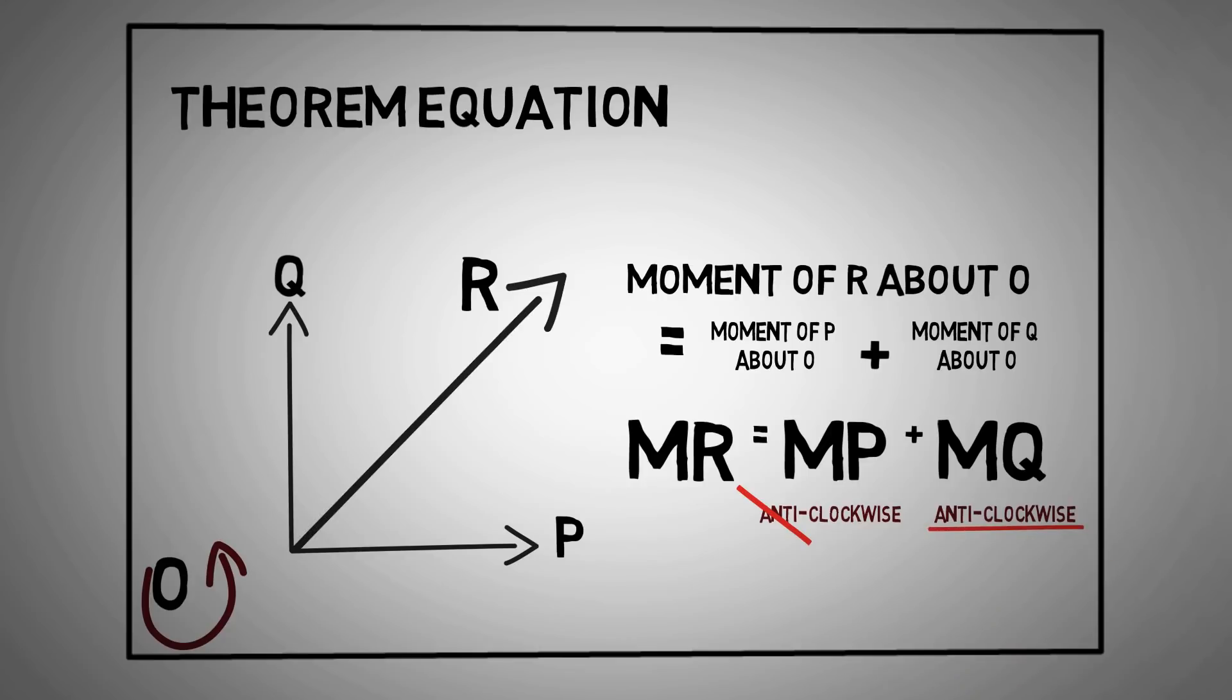In such cases where MP and MQ act in opposite directions, you must consider clockwise as positive and anticlockwise as negative, or vice versa. This is when the concept of algebraic sum comes into picture.